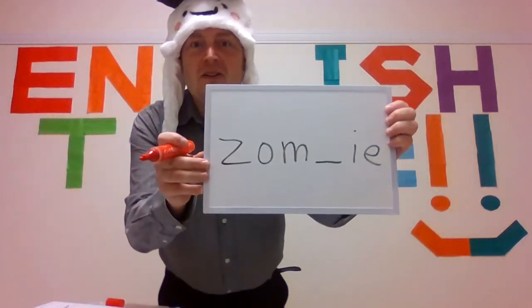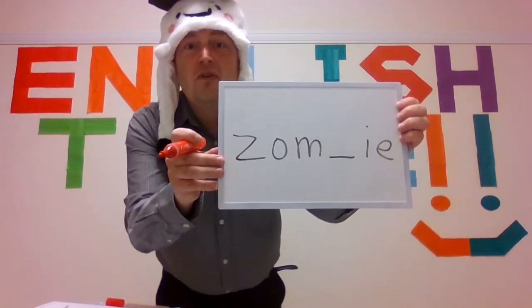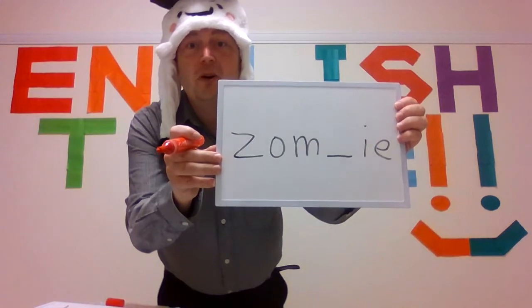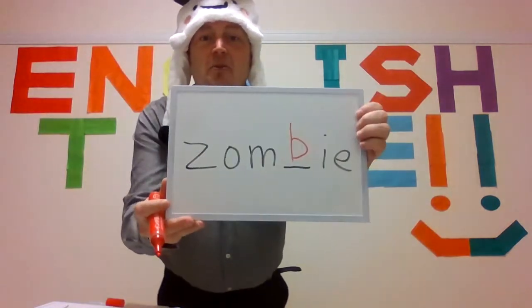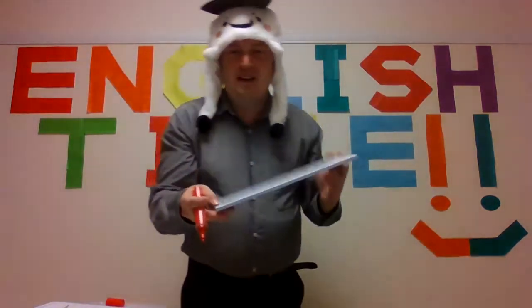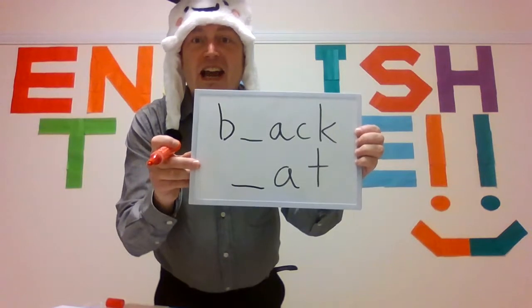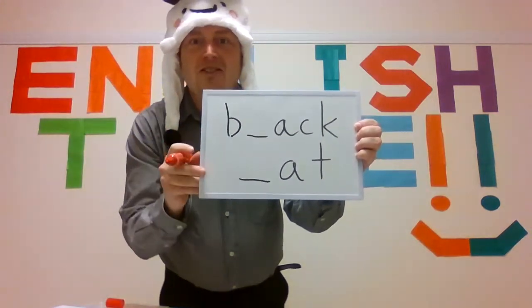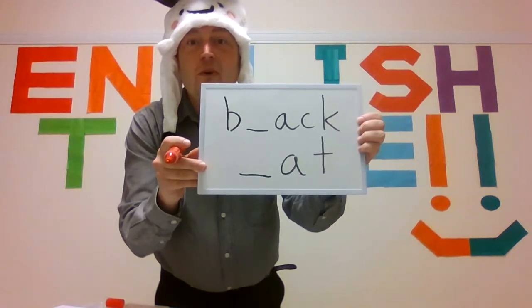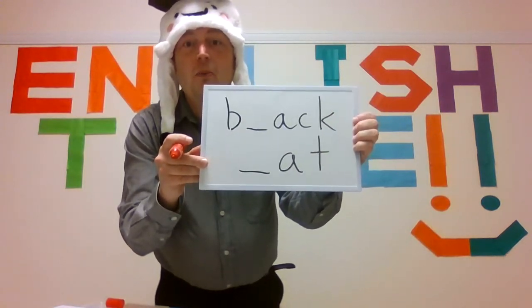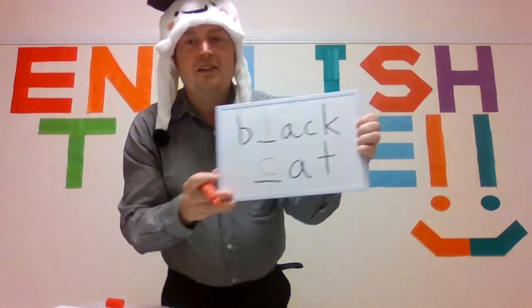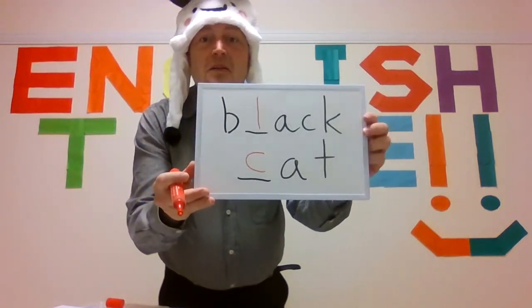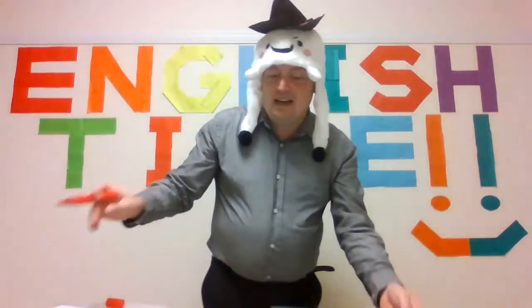I like zombie games! Please repeat: zombie, zombie. The next one is black cat — two letters missing. Five seconds: five, four, three, two, one. The answer is L for black and C for cat. Please repeat: black cat, black cat. Very good!